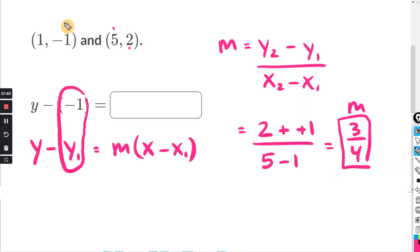So if y1 is negative 1, then x1 must be positive 1. y1 is negative 1. And x1 is positive 1. So that's what we're going to use for the equation.